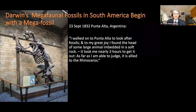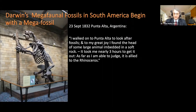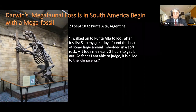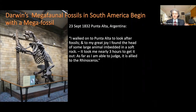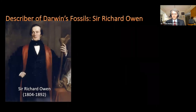Darwin actually made real contributions to vertebrate paleontology that we're sometimes not as aware of. One of his first discoveries was a specimen of megatherium — his first big encounter with the megafauna of South America. He describes walking along and finding the head of some large animal embedded in soft rock; it took him nearly three hours to get it out. At the time he judged it to be something related to the rhinoceros, but when it was described back in England, the great paleontologist Sir Richard Owen recognized it as the giant ground sloth megatherium. Sir Richard Owen would be the describer of most of the vertebrate fossils that Darwin would discover.